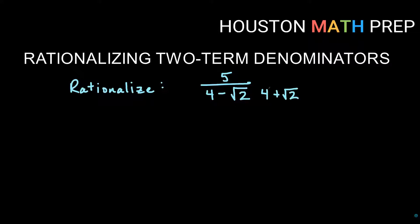Whatever I do to the bottom, I must do to the top, as we did in our other rationalizing denominators video. So I need to multiply the top by four plus root two also. Now you can see if we're multiplying by more than one term, then we're going to need to distribute things. And if we need to do that, we want to think about having parentheses around everything that has more than one term. We're going to need to distribute the five here and distribute everything on the bottom.